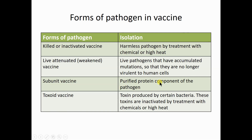In a subunit vaccine, only one particular protein or virulent gene — the one causing infection in our body cells — is taken. A purified protein component is isolated from the pathogen and used to make the vaccine, which is known as a subunit vaccine.